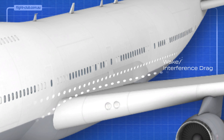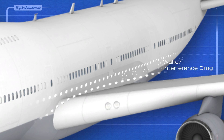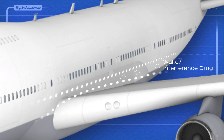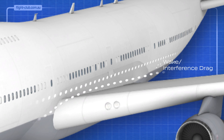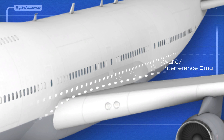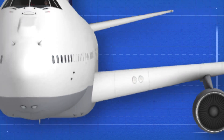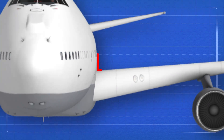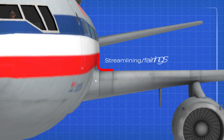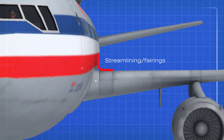The wake also creates a greater pressure difference between the front and rear surfaces of the aeroplane, which increases drag. This is called interference drag. Interference drag is strongest where the surfaces meet at sharp angles. The streamlining of shapes to control local pressure gradients helps to minimise interference drag.